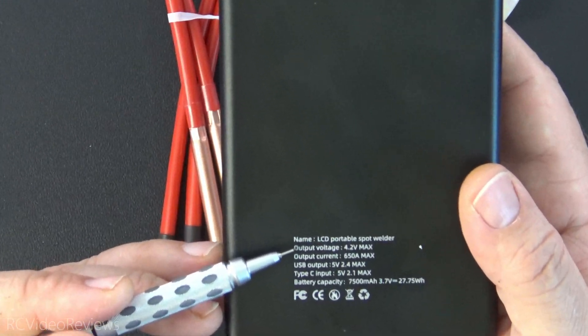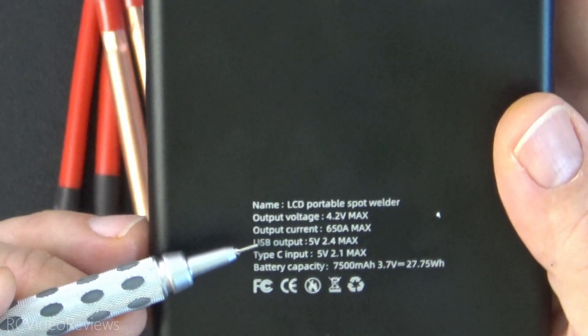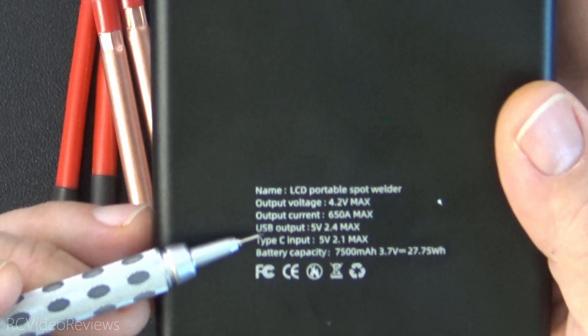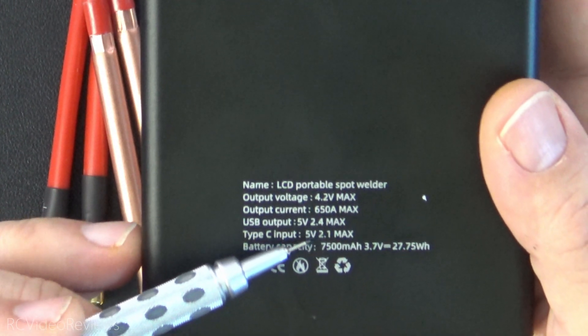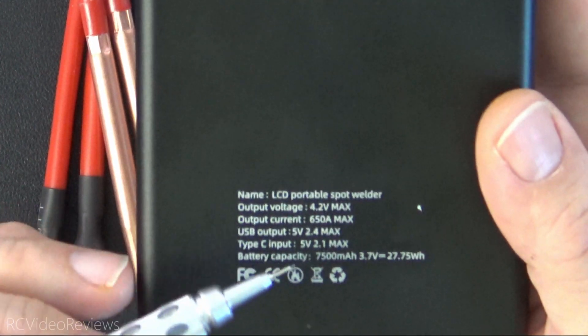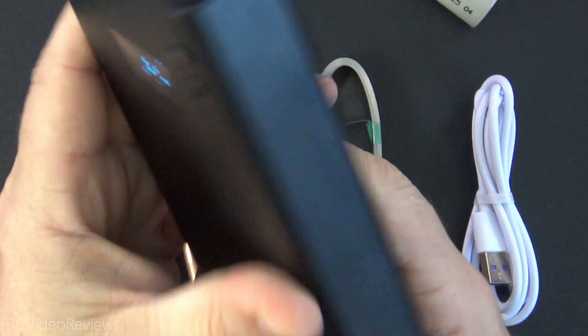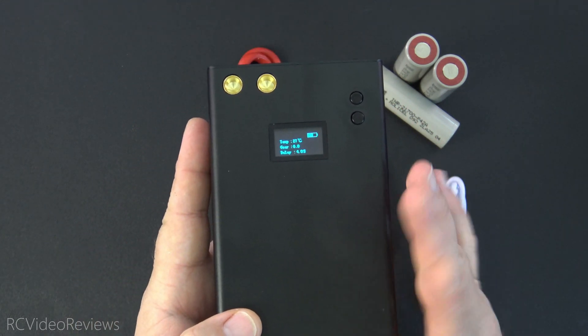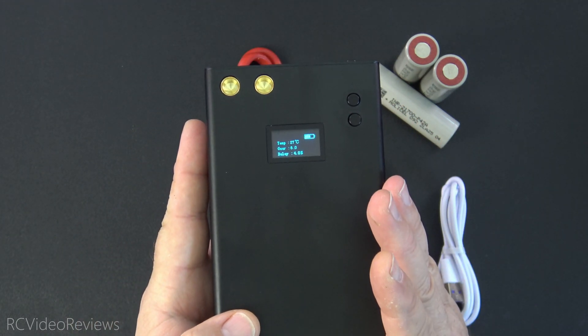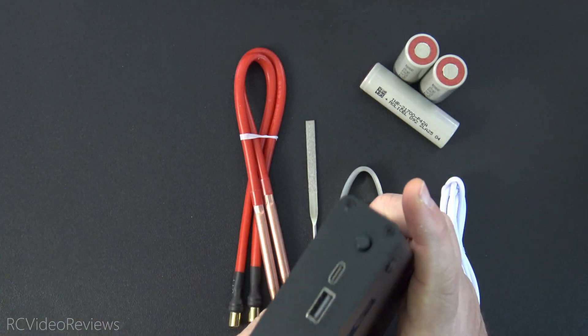On the back there are some specifications about the unit. Output voltage is 4.2 volts max, output current 650 amp max, that's a jolt. USB output 5 volts at 2.4 amps max and then type C input 5 volts 2.1 max. Battery capacity is 7500 milliamp hours, but they do not specify what type of chemistry it is. At least I'll assume they have some kind of charge controller inside to ensure that if there's any balance requirements or voltage cutoff it's handled by the charge circuit.